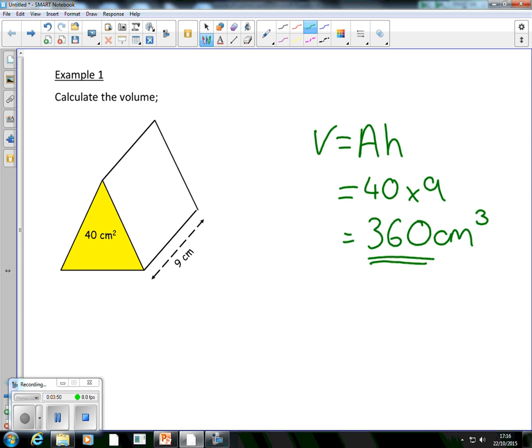Now, that is National 4 level. That's a bit of revision. You should be able to do that already in theory. But it's just a wee reminder. I think that's quite useful. At National 5, what we're going to do is we're going to look at it where they don't give you the area, where you have to calculate the area first.